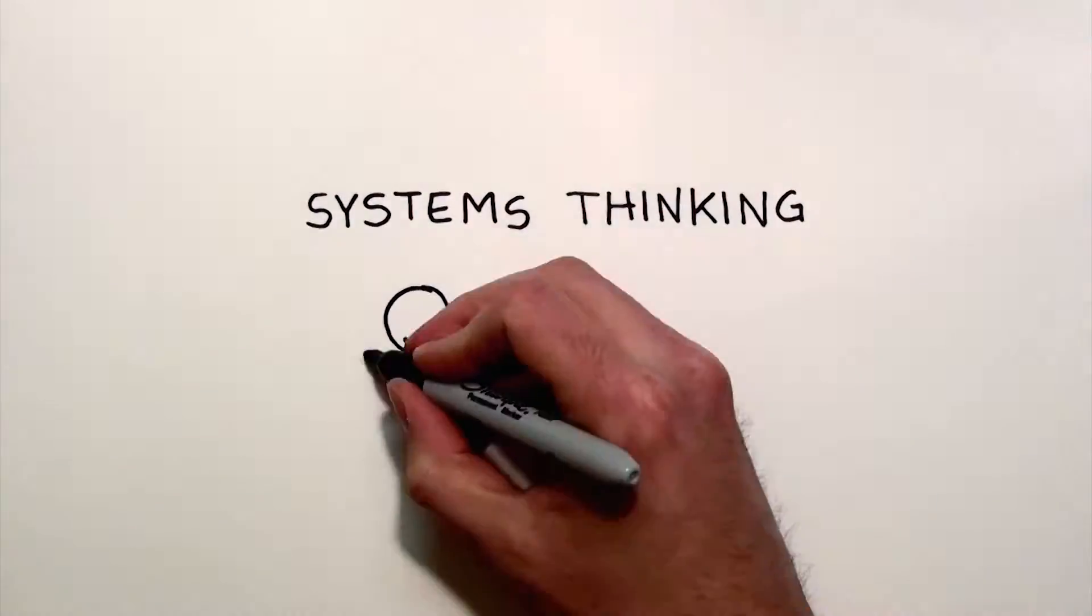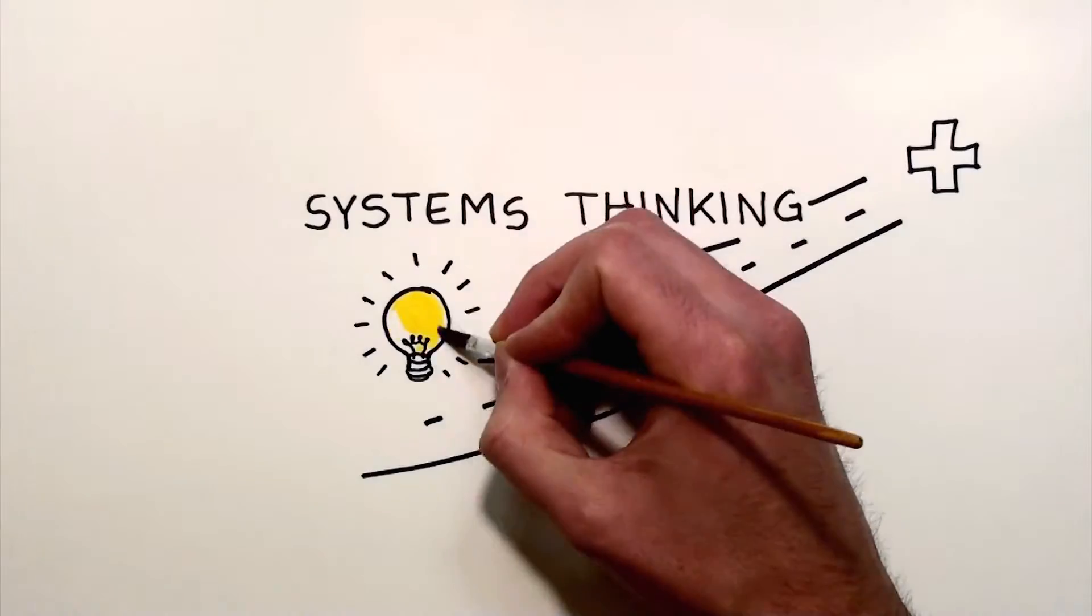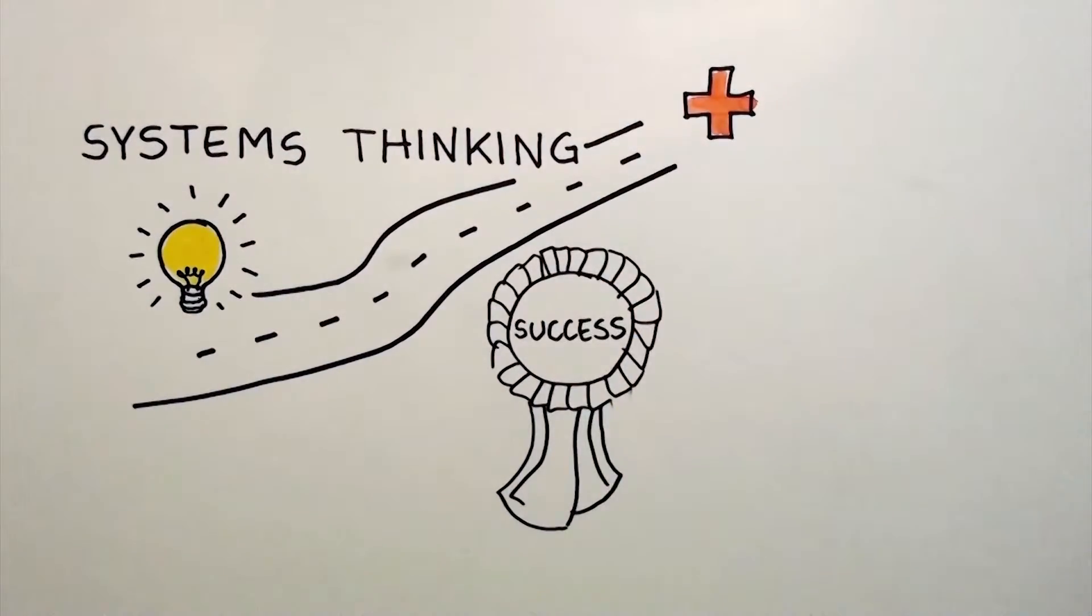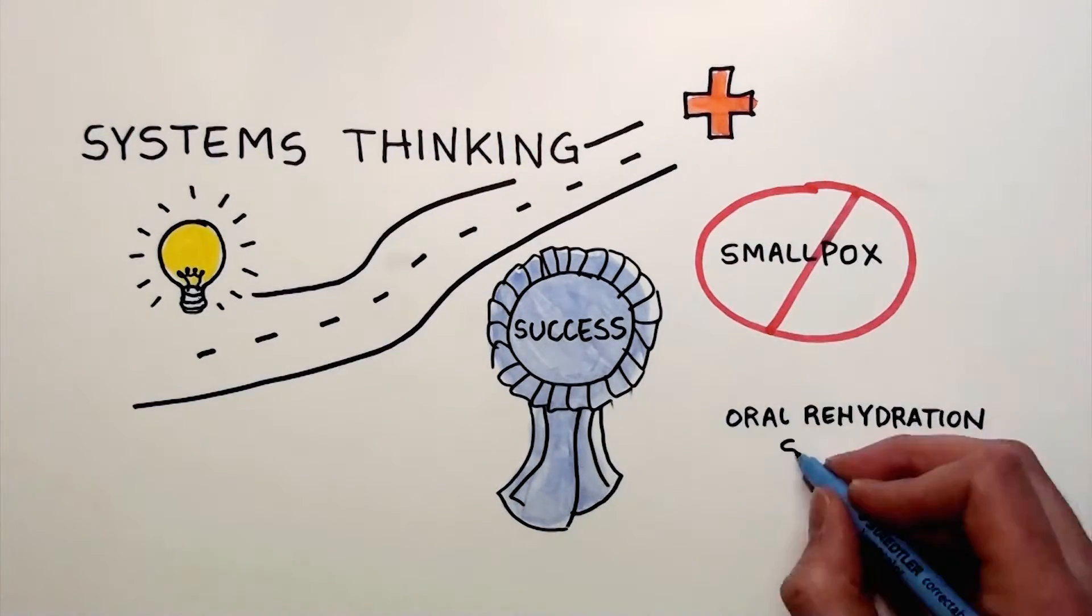Systems thinking is a transformational way of thinking about and approaching health. In the past, we've witnessed tremendous successes such as the eradication of smallpox and the treatment of diarrhea with oral rehydration solutions.